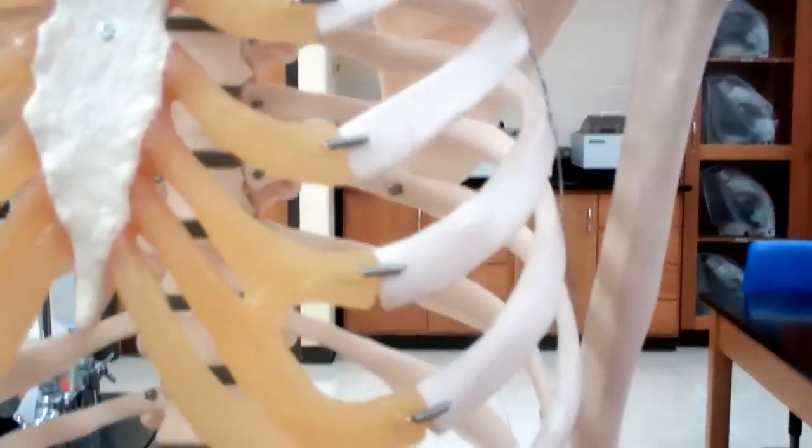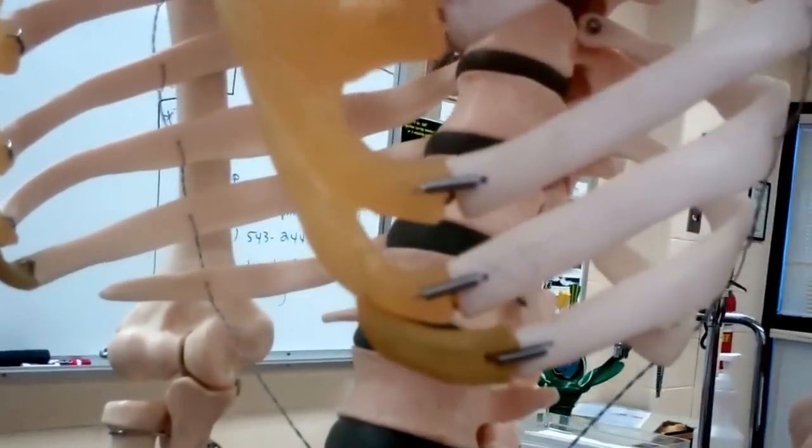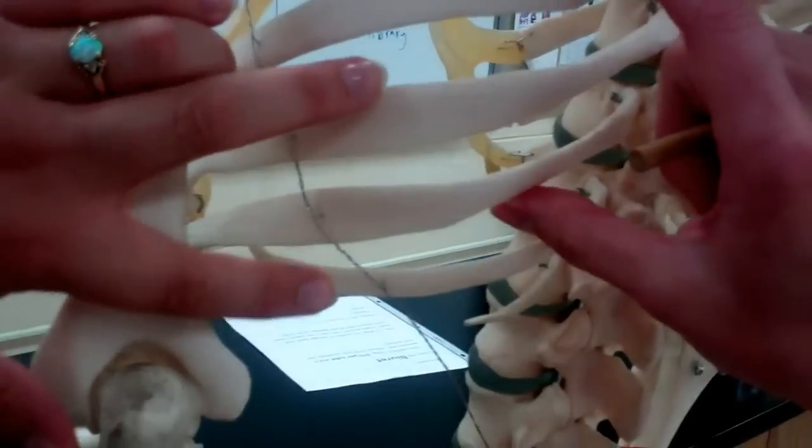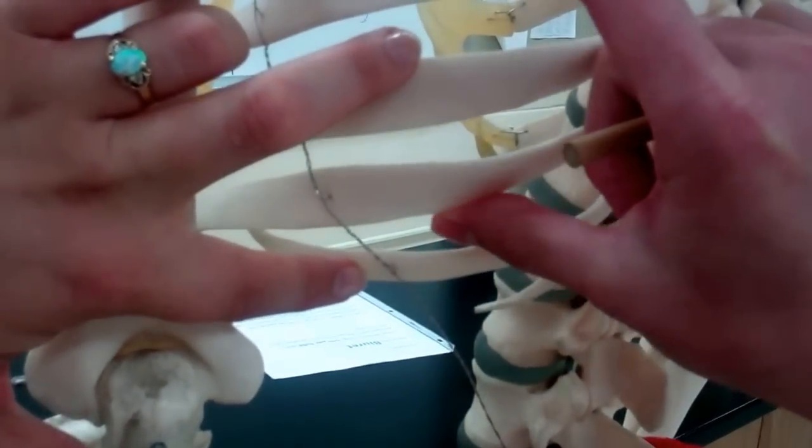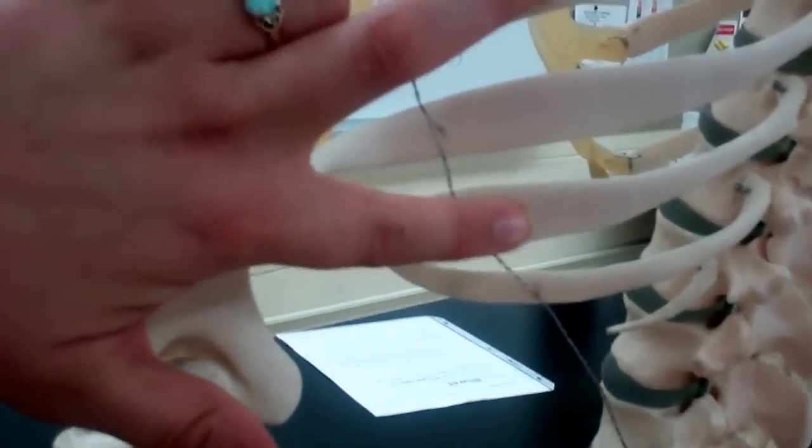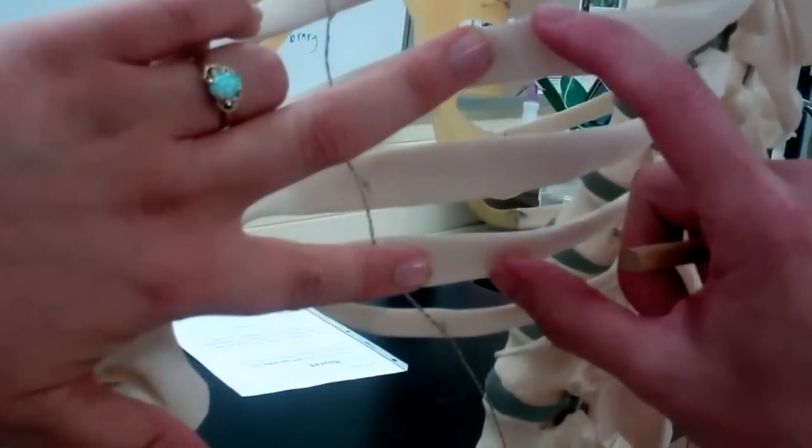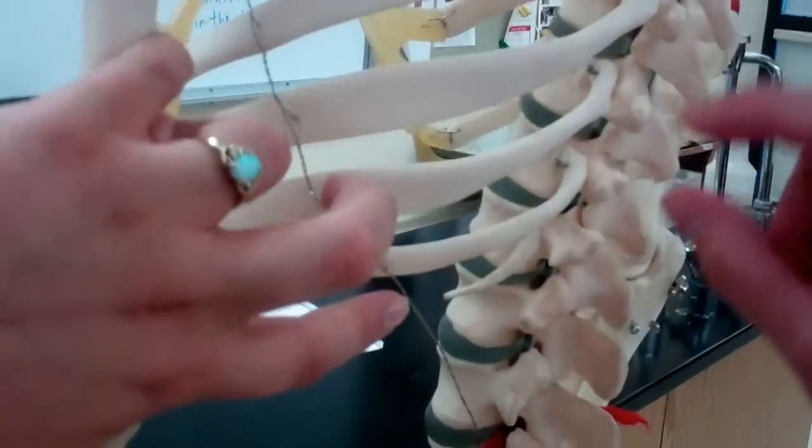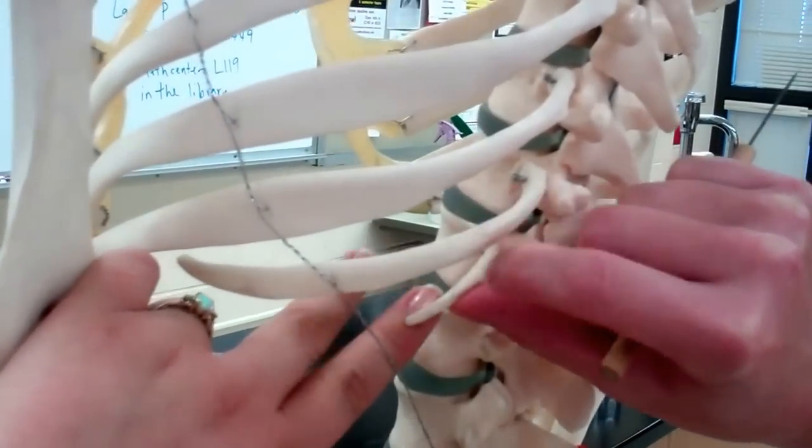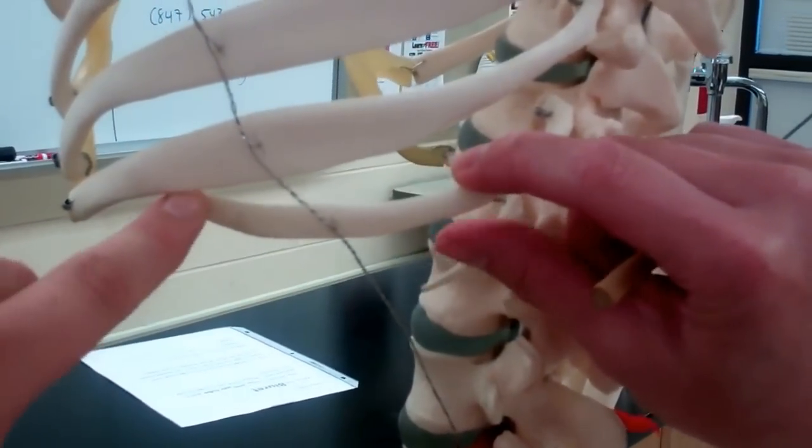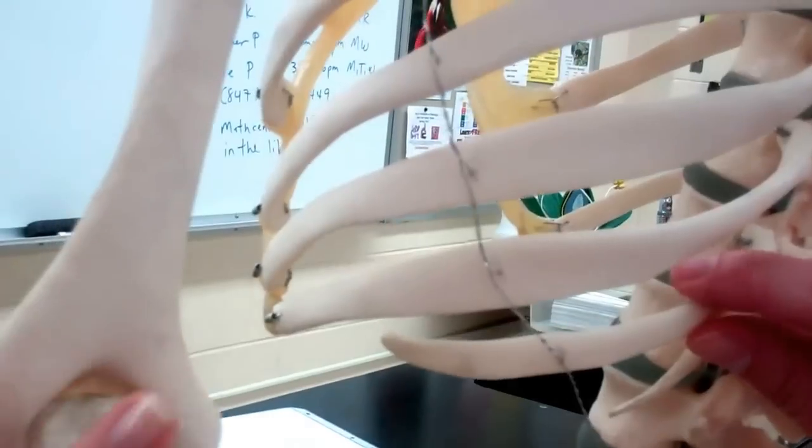As we move down to the rest of the ribs, ribs 8 through 12 are considered false ribs. Three of these are just false ribs - they are not going to be connected directly to the sternum by cartilage, but will be held in place. These last two down here are our false floating ribs. These are floating - they are not attached to anything on the other side. They're just hanging out, floating around.